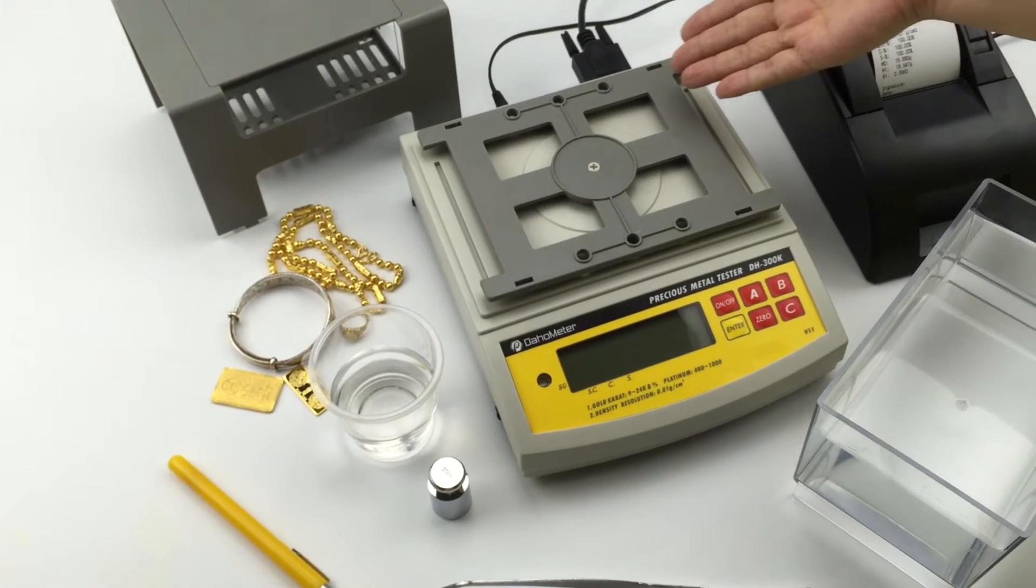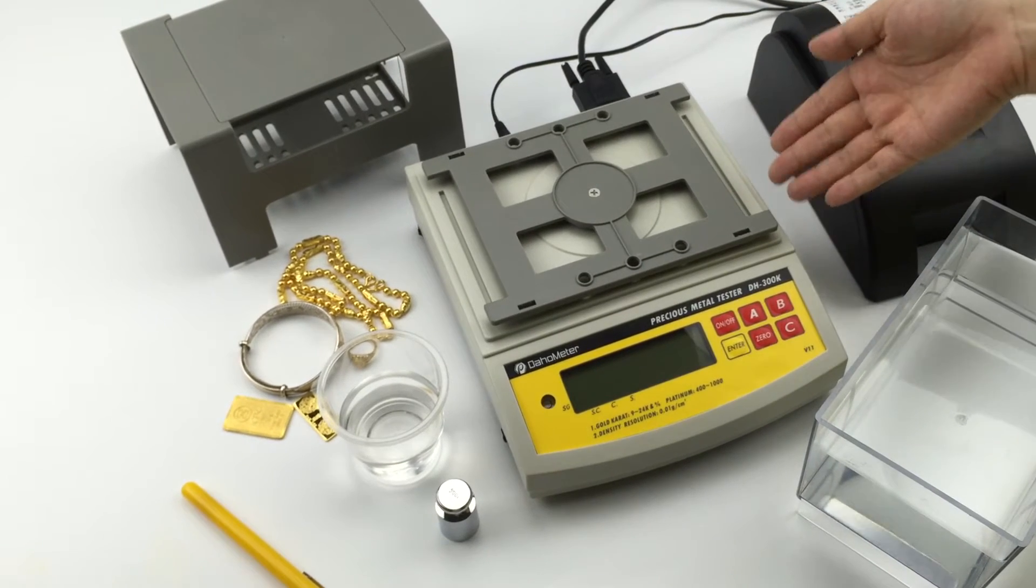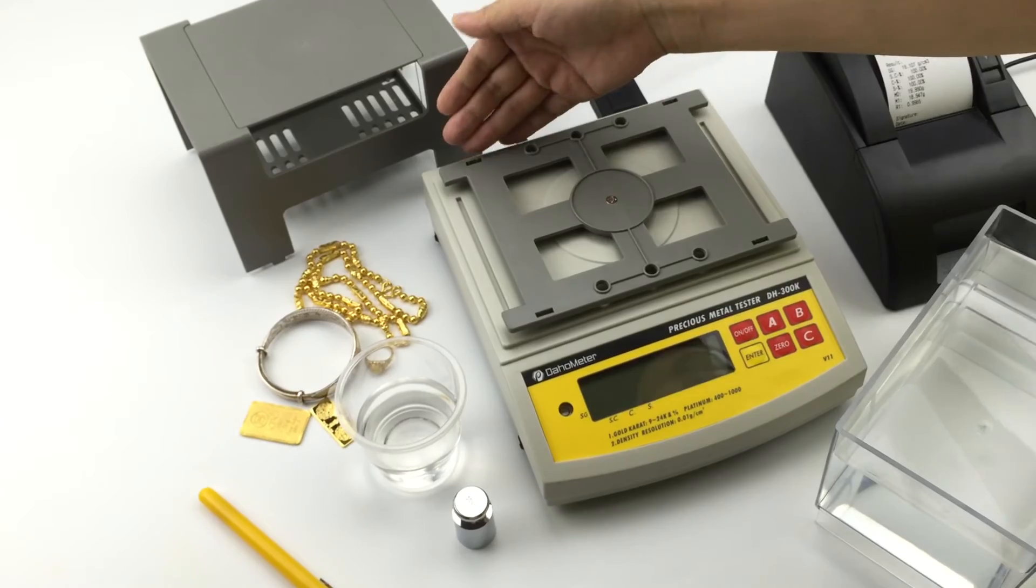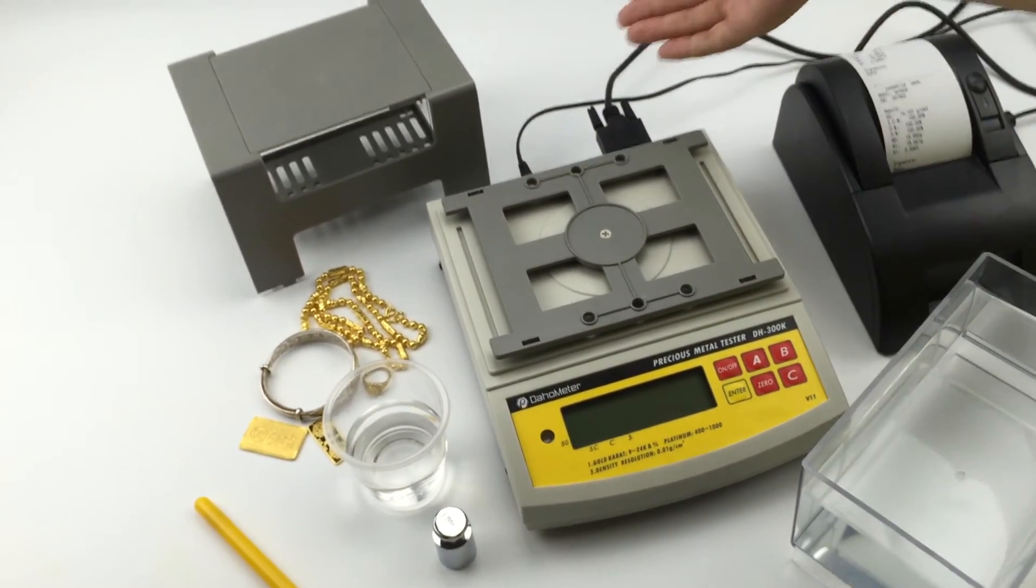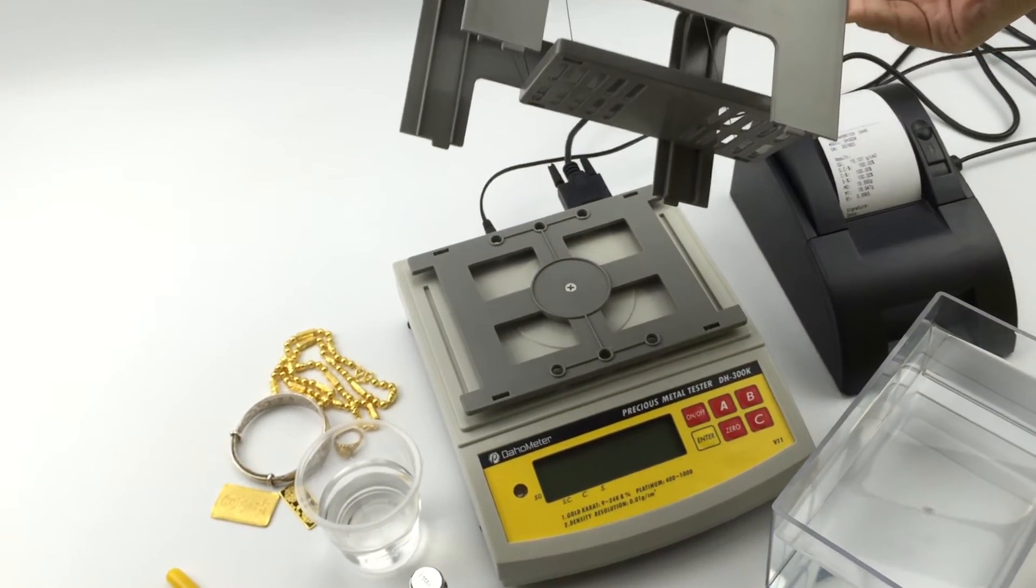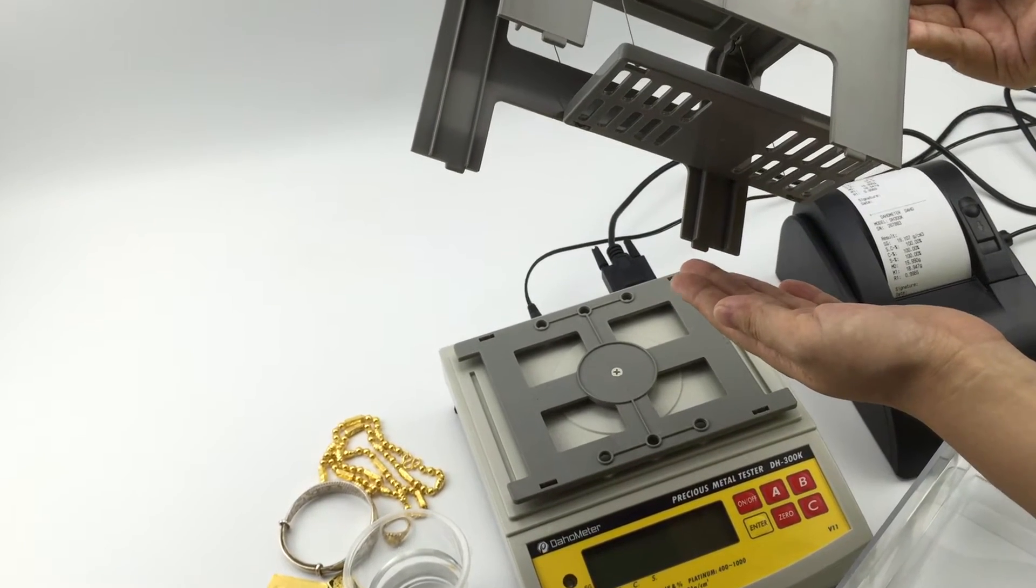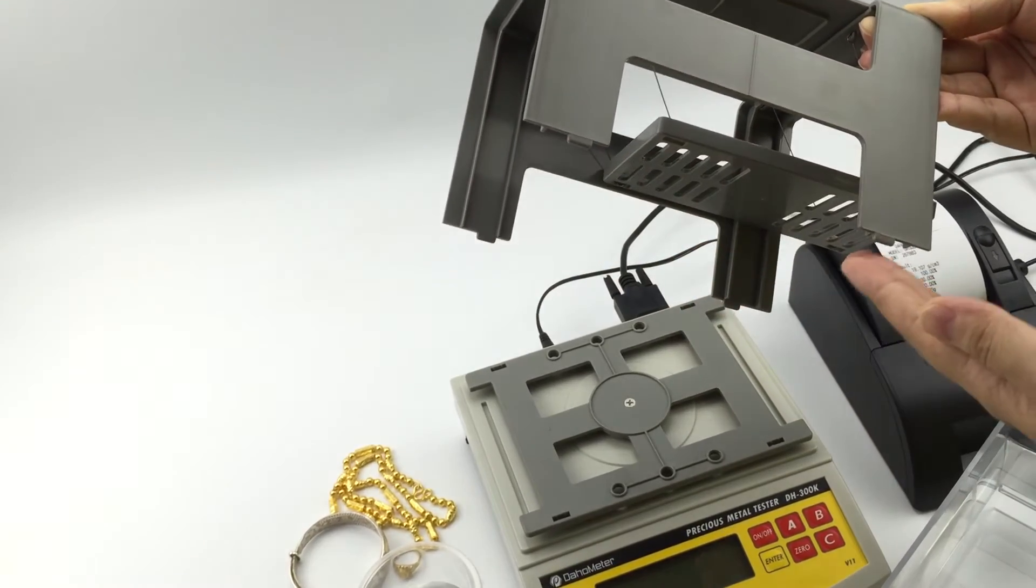You will see there are four holes on the host. One, two, three, four. The four holes is used to fit into the four feet of the shelf. See the four feet. One, two, three, four.